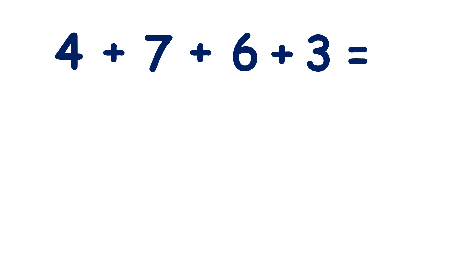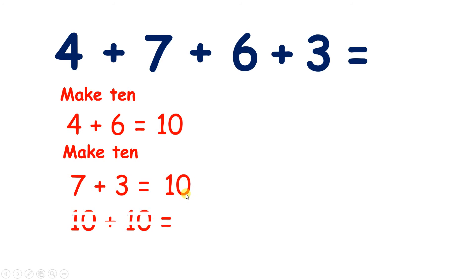Now we have 4, 7, 6 and 3. Well this is interesting. Which numbers here make a number bond to 10? Well 4 and 6 form a number bond to 10. But we can also make 10 by adding 7 and 3. So now we've added all our numbers so we can add 10 and 10 and that gives us 20.